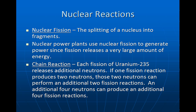Nuclear reactions are powered mainly by nuclear fission, which is the splitting of a nucleus into fragments. Nuclear power plants use nuclear fission to generate power since fission releases a very large amount of energy. When they split atoms, they release neutrons, collect those neutrons, and the collection of those neutrons produces heat, which is then turned using a steam turbine into electricity.